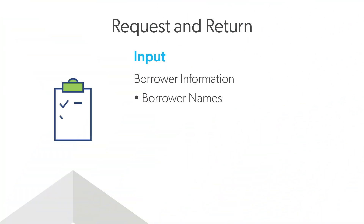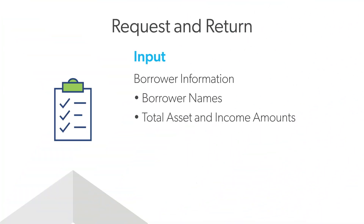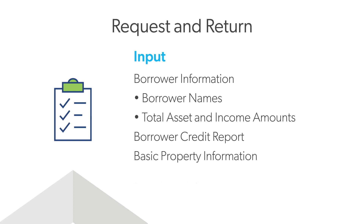Start by entering the borrower's name along with total asset and income amounts. Risk Check requires a borrower's credit report through the same process as an LPA submission. Lenders can submit a hard or soft inquiry report. Basic property and loan information are also required.